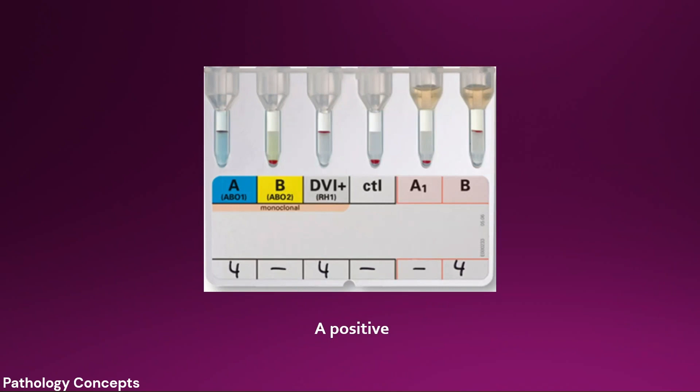Here you can see the agglutination is seen with A anti-sera, D anti-sera, and with the pooled B cell. So our blood group is A positive.